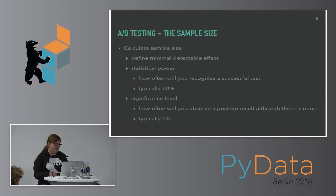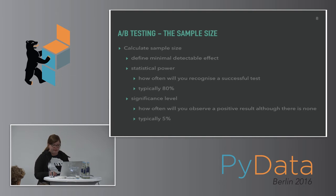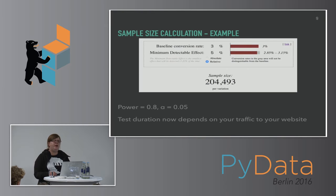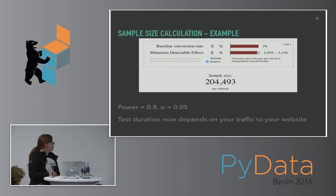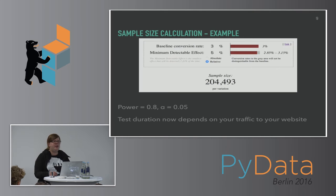By calculating the p-value in combination with a significance level, we control how often we declare a difference between two variants although there actually is none. To calculate the sample size in advance, you have to consider your minimal detectable effect and statistical power — typically set to 80% — meaning how often you will recognize a successful test. You also define a significance level — typically 5% — meaning how often you will observe a positive result although there actually is none. There are sample size calculators that allow you to do this. For example, with a baseline conversion of 3% and wanting to detect a 5% relative change, you need a large sample size per variant, meaning your experiment could run for several weeks or months — which in an agile environment is sometimes not feasible.